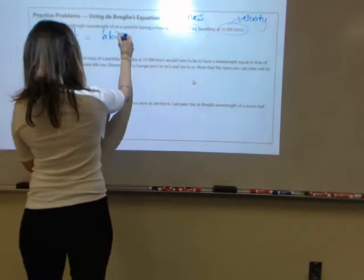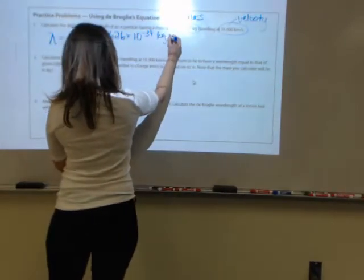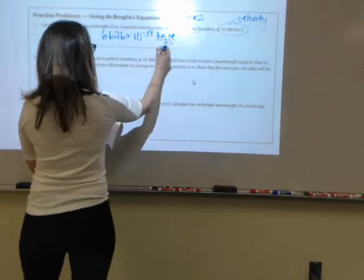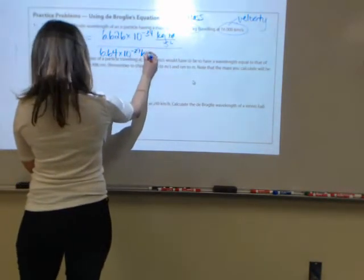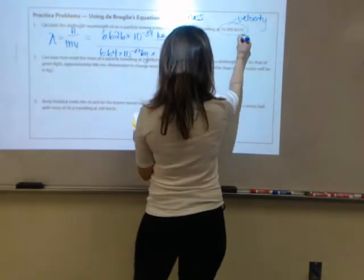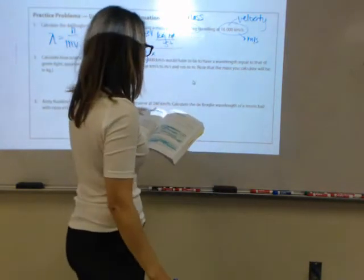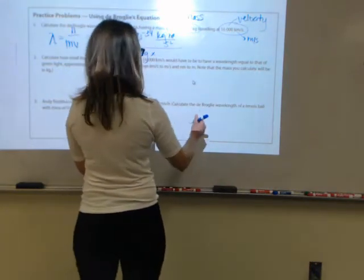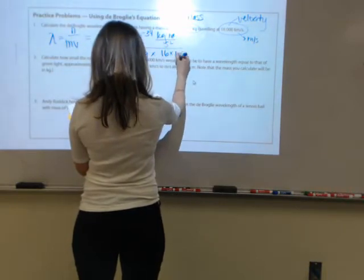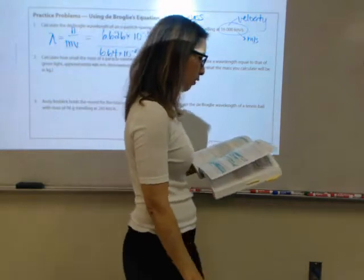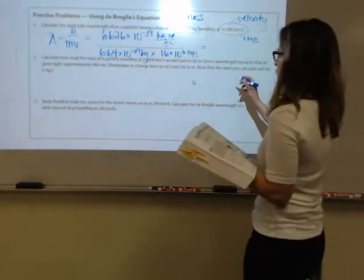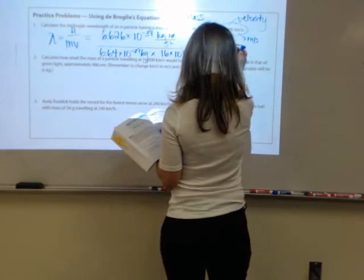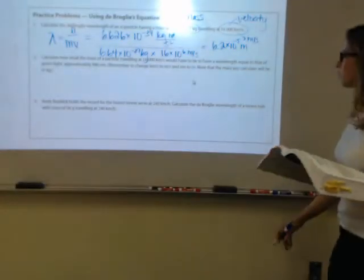Planck's constant is 6.626 times 10 to the negative 34 kilograms times meters squared over seconds squared. That means that your mass has to be in kilograms to cancel the unit, which ours is. So, 6.64 times 10 to the negative 27 kilograms times, your velocity needs to be in meters per second, so it cancels with the units in Planck's constant. So, this has to be converted to meters per second. That is a one-step metric conversion. You're going to get 16 times 10 to the sixth meters per second, which I know is improper scientific notation. 1.6 times 10 to the seventh would be proper scientific notation. You're going to end up with 6.2 times 10 to the negative fifth meters for your result.